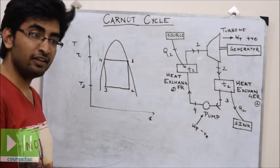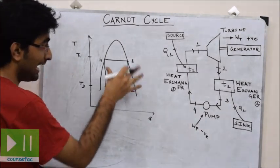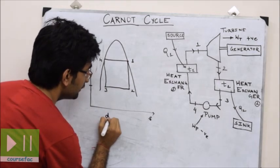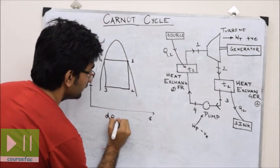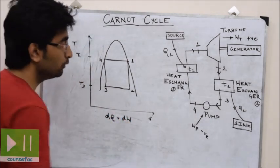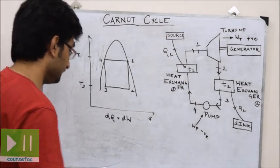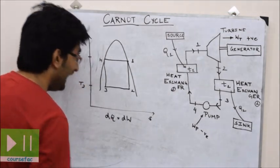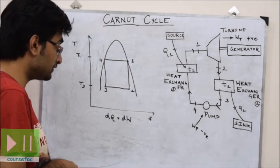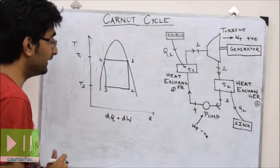Now I will be deriving the formula for efficiency. We know that in this cycle, DQ is equal to DW. That is, work done is equal to heat supplied or heat rejected, since the change in internal energy is zero.